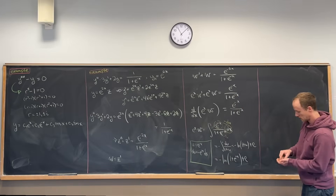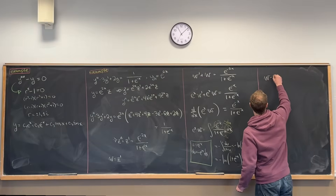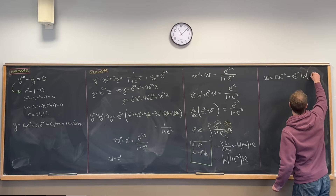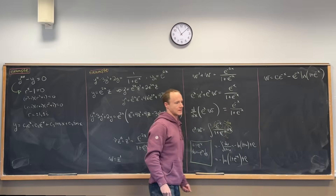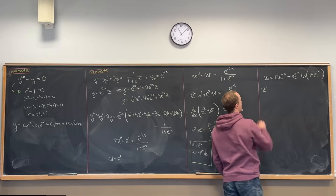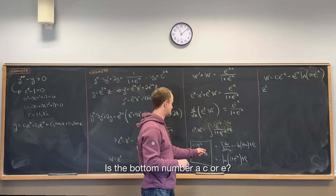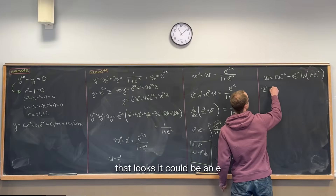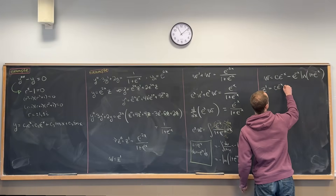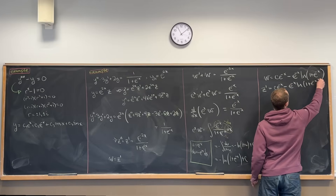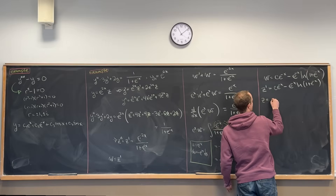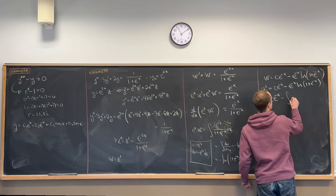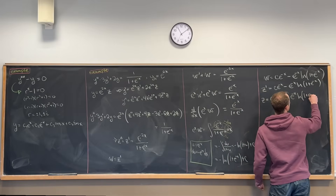Now we're almost home free. We can say w equals a constant times e to the minus x minus e to the minus x times the natural log of 1 plus e to the minus x. Since w equals z prime, we have z prime equals c·e to the minus x minus e to the minus x times the natural log of 1 plus e to the minus x. So z equals c1 times e to the minus x minus the antiderivative of e to the minus x times the natural log of 1 plus e to the minus x dx.